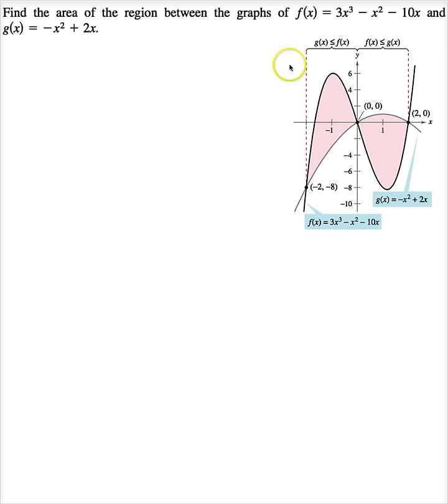Now suppose I've been given a region f of x is 3x cubed minus x squared minus 10x, and g of x is negative x squared plus 2x. Again the first thing you want to do is sketch your functions. And I've already done this and I see that this one goes up and comes down and this one goes up. So basically I'm going to have two different regions.